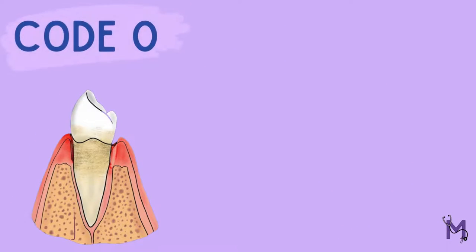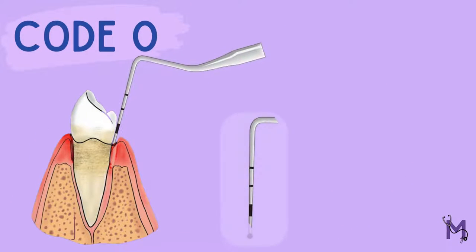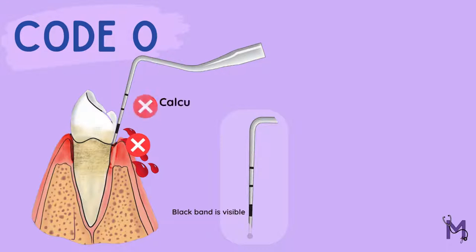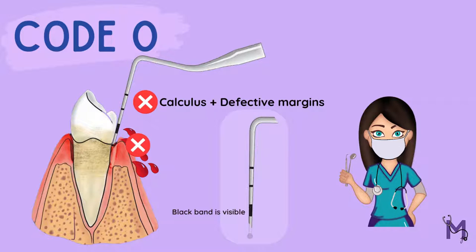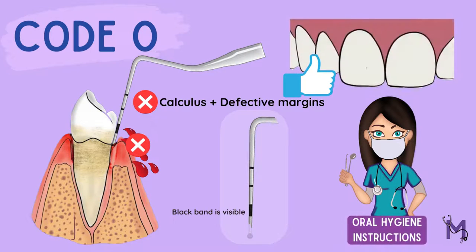Lastly, a score of code 0 is given when the black band is completely visible but there is neither any bleeding on probing nor the presence of calculus or defective margins. This is indicative of the patient maintaining good oral hygiene, and hence they require reinforcement of oral hygiene instructions to continue to do so.